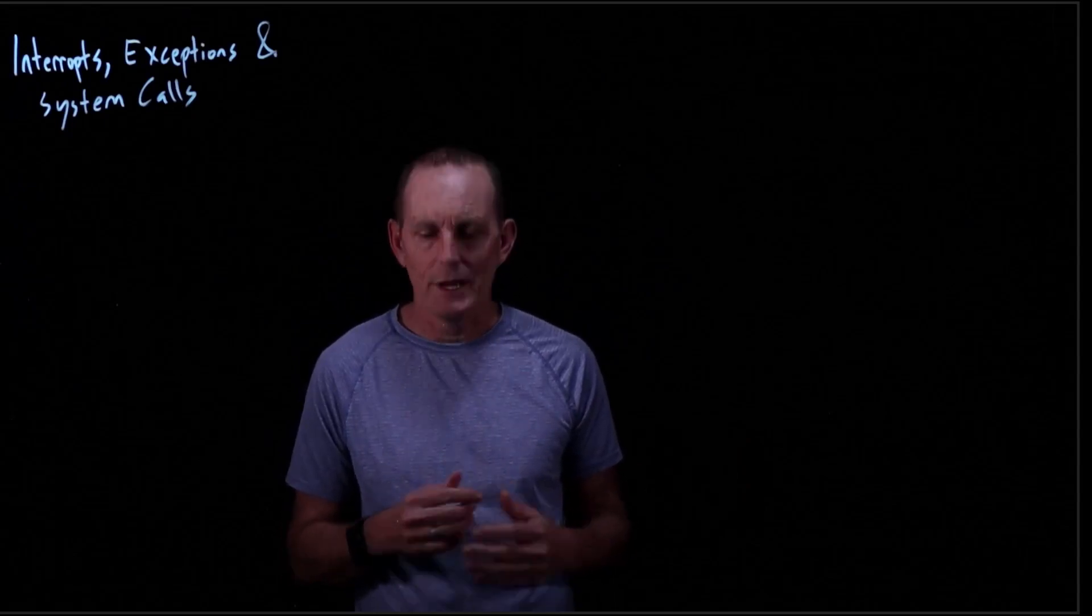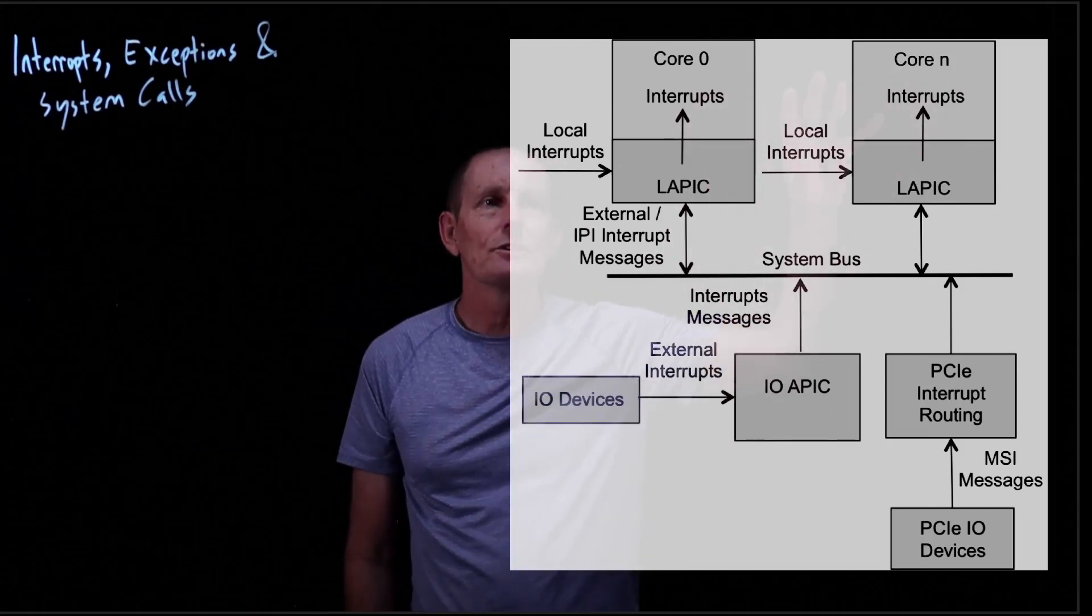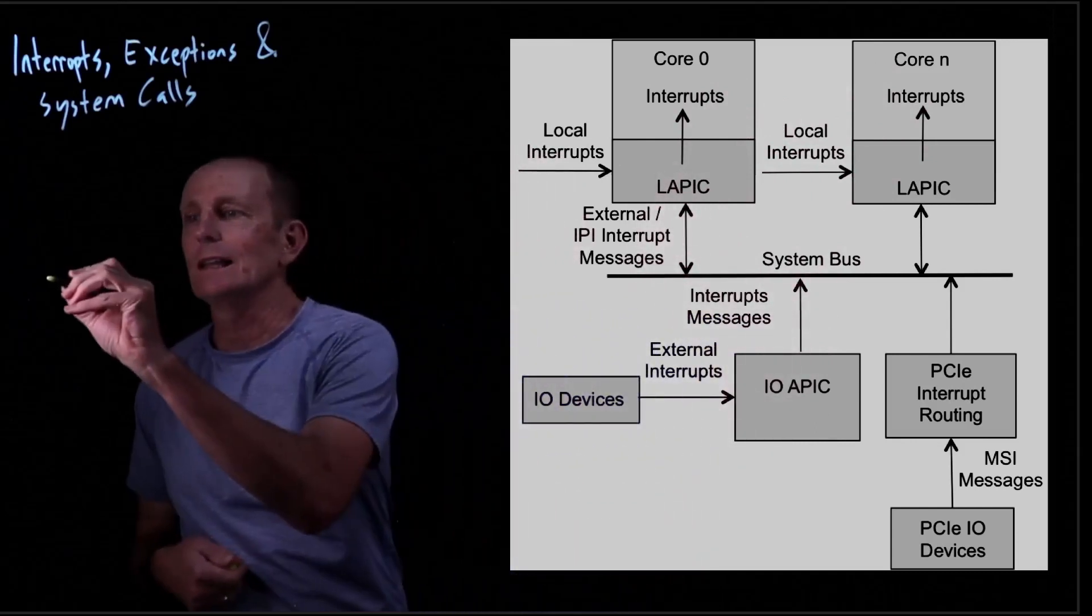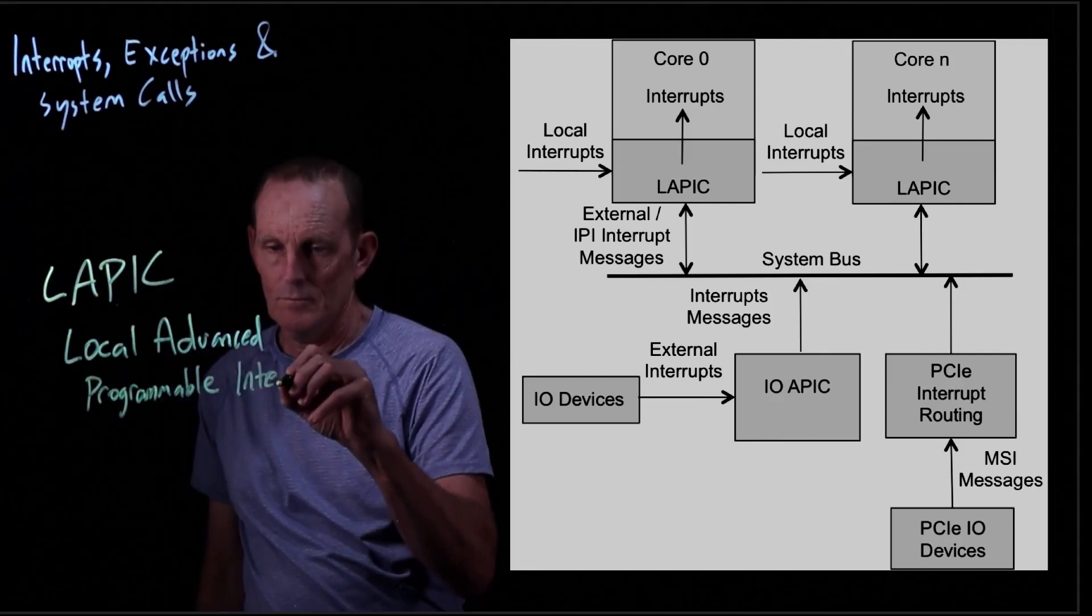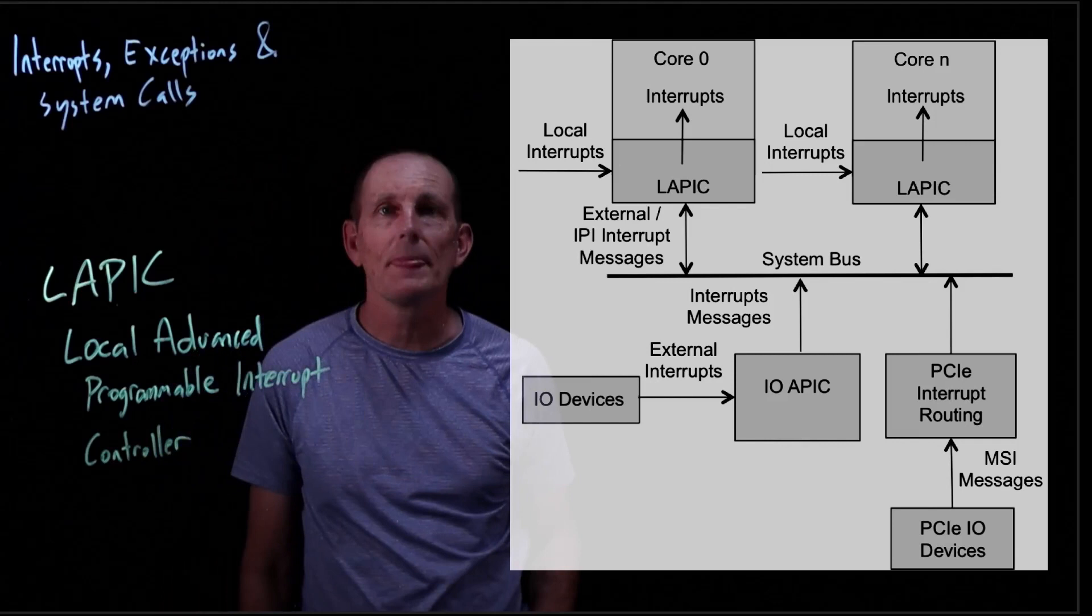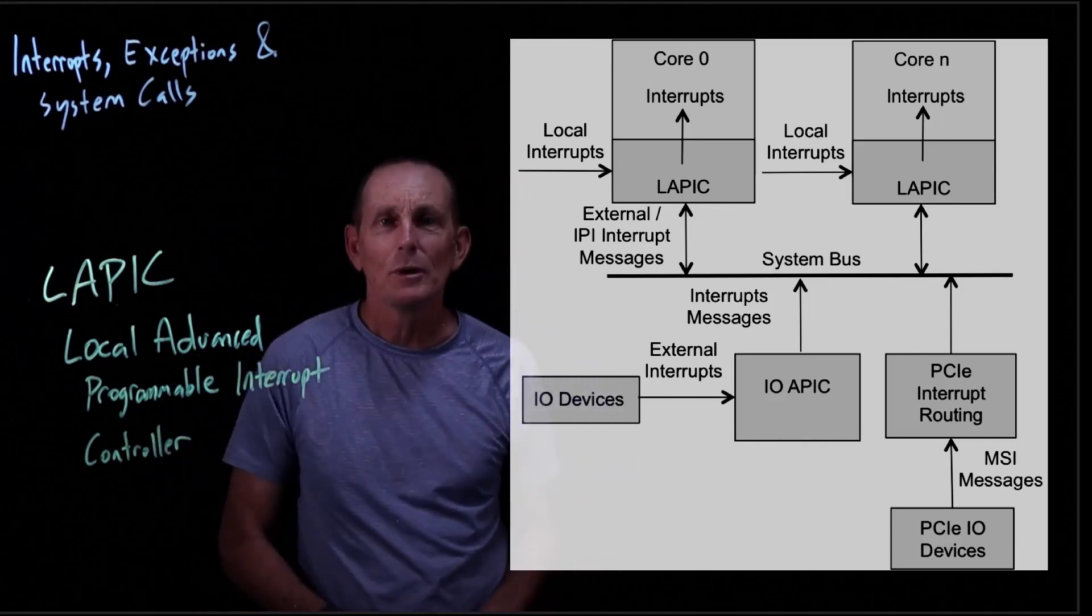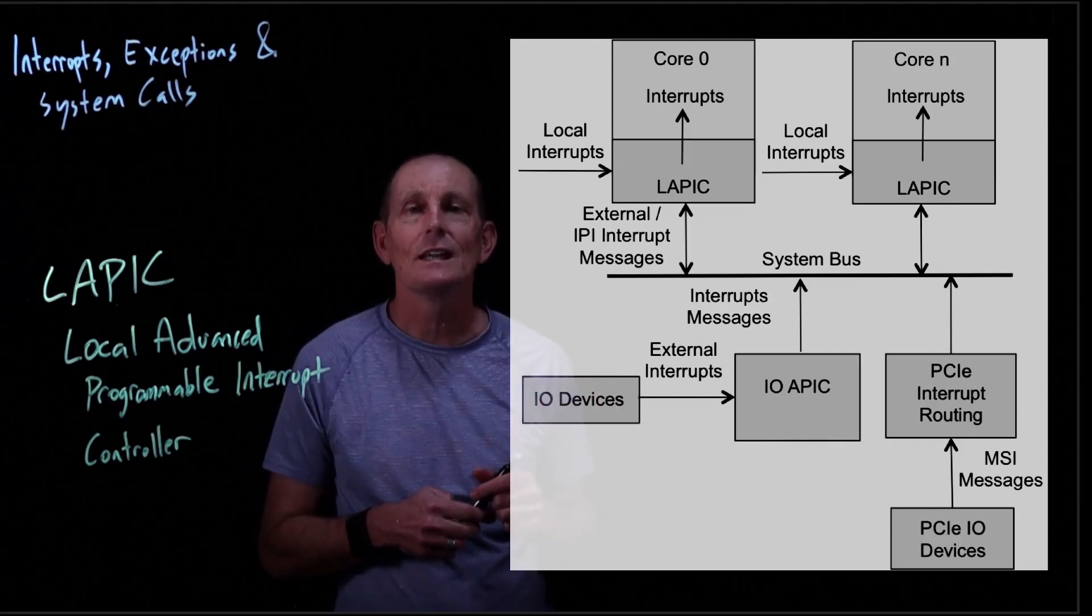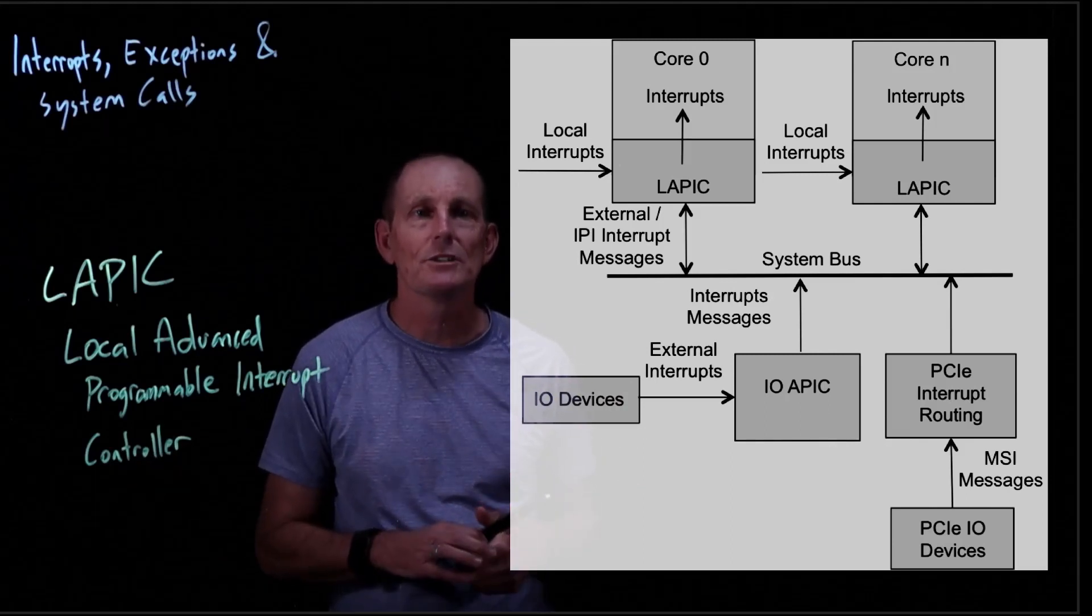Let's look at a diagram of how interrupts are generated. What we see here at the top is the two cores. Any local interrupts that are happening, like a divide by zero, are handled by the LAPIC—the local advanced programmable interrupt controller. It's programmable because you can tell it which interrupts to enable or disable, and which trap numbers to generate in response to interrupt.